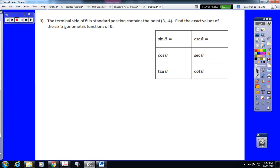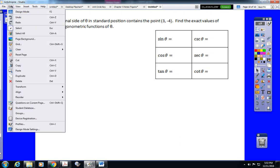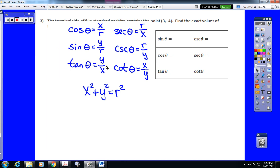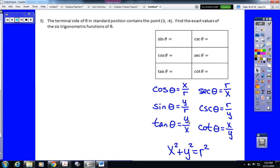Same exact deal. So we have on our reference sheet this information. Now, this one is going to be a little bit different because we're not going to get a... Well, yeah, we will. Never mind. So we have the point 3, negative 4. That tells us that x is 3 and y is negative 4. So we're going to do x squared plus y squared equals r squared. That would be 3 squared plus negative 4 squared equals r squared.